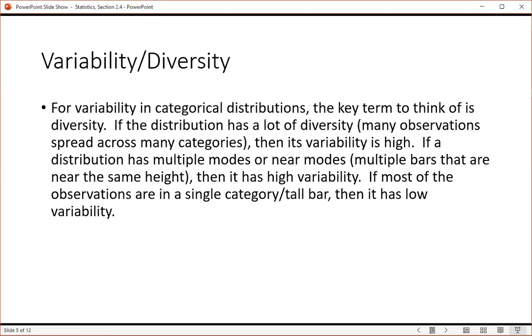For variability in categorical distributions, the key term to think of is diversity. If the distribution has a lot of diversity, meaning many observations spread across many categories, then its variability is considered high. If a distribution has multiple modes or near modes, meaning multiple bars that are near the same height, then we would say that it has high variability.